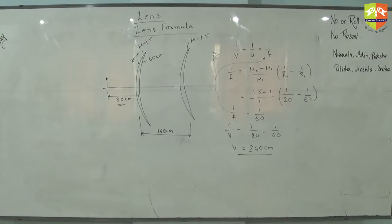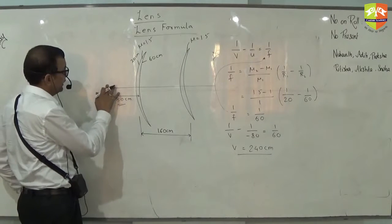You have sign convention. Okay, do one thing, draw a ray diagram. It will really help you. If you draw a ray diagram, take a point object. Don't take extended object.